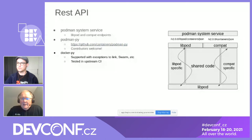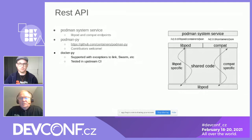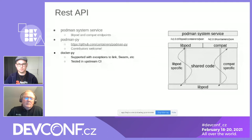There are a couple of features in the REST API we don't currently support and don't plan to ever support. The two main ones are Link — which has actually been deprecated by Docker — and Docker Swarm, which we don't support at all. The reason is we believe Kubernetes is the future and we really want to guide people towards Kubernetes.